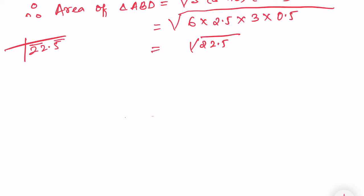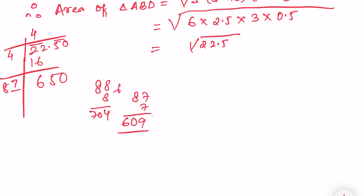So 4 times 4 is 16. If I do the calculation, I can get 4.7. You do it after this and get it. Approximately 4.7 centimeter square.